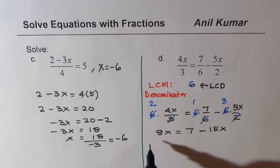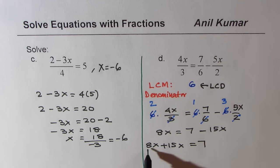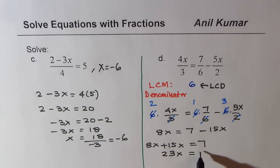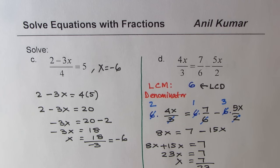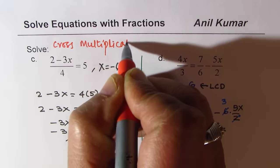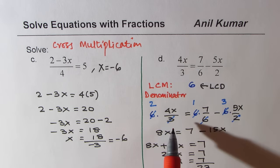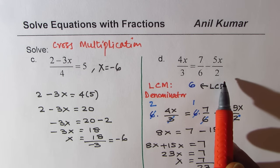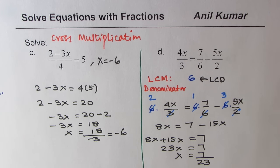Now it is simpler to solve. Bring the x terms to one side: 8x + 15x = 7. When you add, 8 + 15 is 23, so you get 23x = 7, meaning x = 7/23. That is the solution for the given equation. So in this page we have seen both techniques: cross multiplication for simpler cases, and the LCD method — multiplying both sides by the lowest common multiple of the denominators — to eliminate fractions and solve as a linear equation.